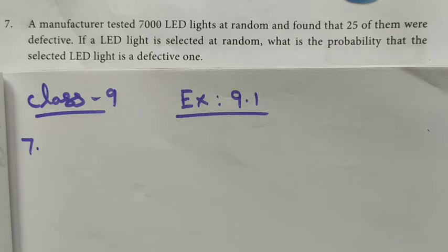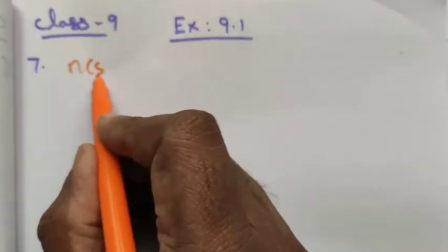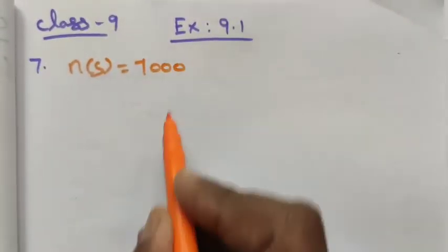Here, total number of LED lights is given as n(S) equals 7000 LED lights.